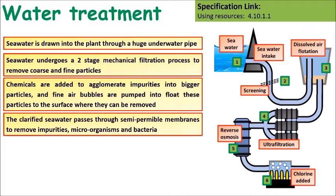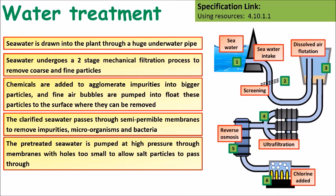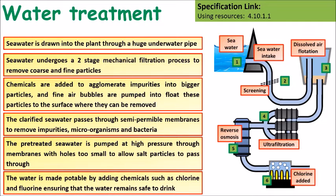The clarified seawater passes into a semi-permeable membrane to remove impurities, microorganisms and bacteria. The pre-treated seawater is then pumped at high pressure through membranes with holes too small to allow salt particles to pass through. Finally, the water is made safe to drink by adding chlorine.